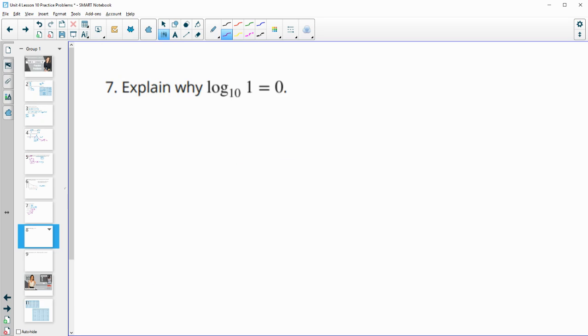Number seven, explain why log base 10 of 1 equals 0. So if we think about it, this is the exponent on a 10 that would give us 1. So 10 to the 0 power is equal to 1. That's a true statement. So this is why the log base 10 of 1 equals 0. Because 0 is the exponent on a 10 that would kick back 1.